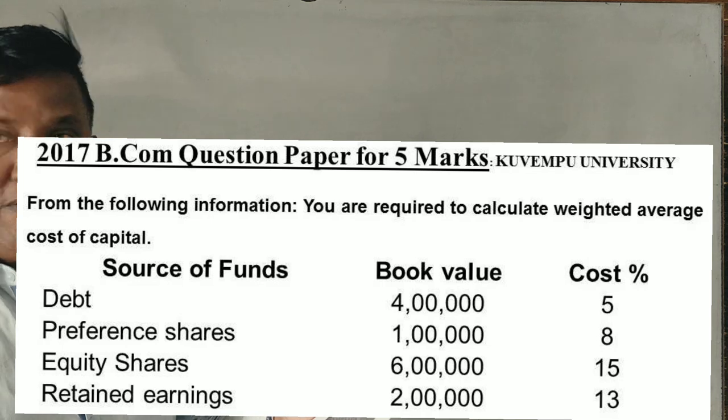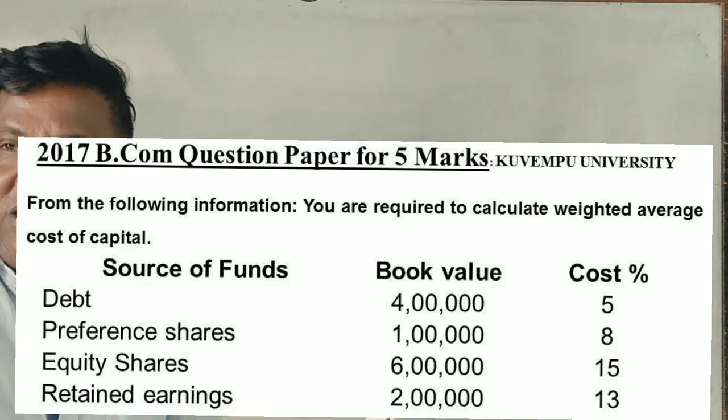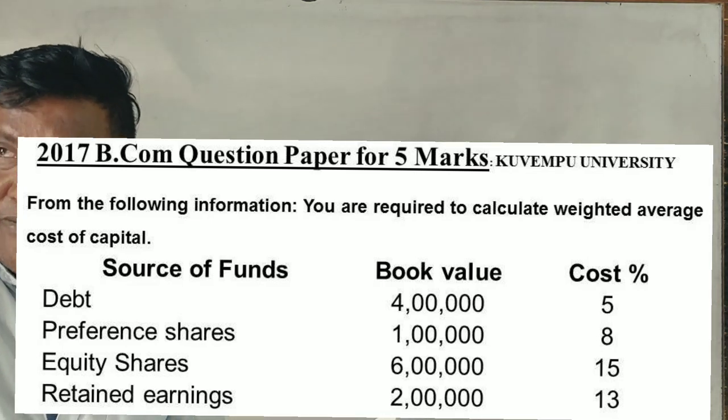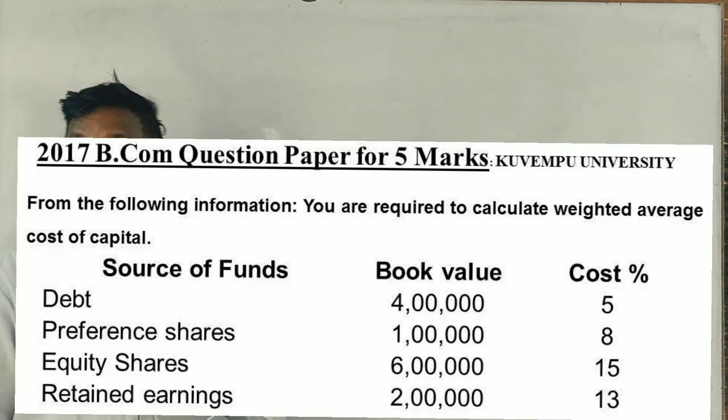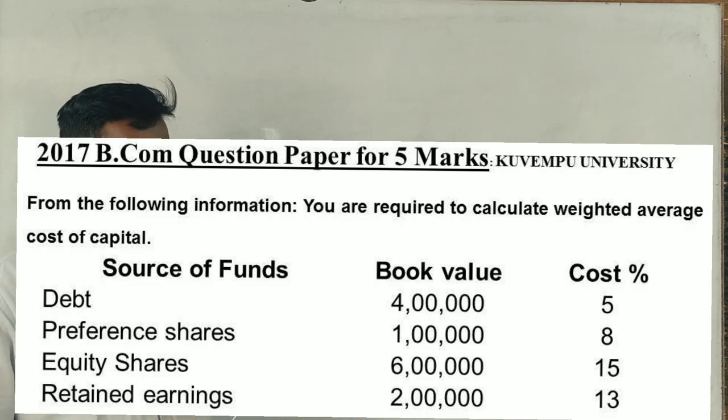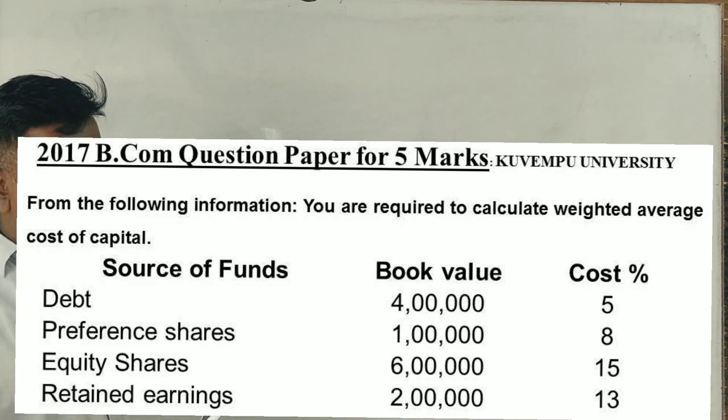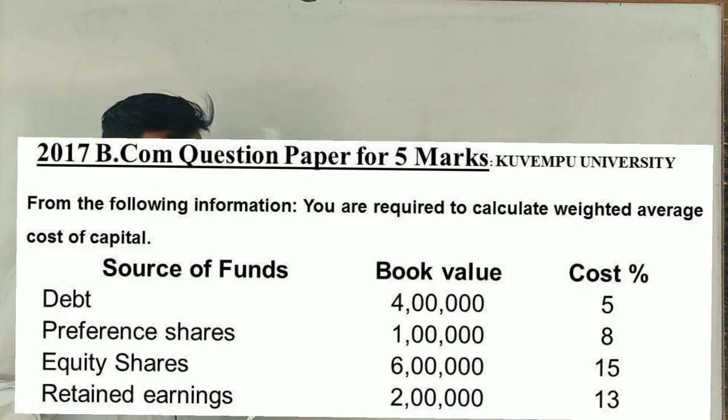From the following information, source of funds: debt capital or debt, book value 4 lakhs and cost percentage is 5%. Preference shares 1 lakh, 8%. Equity shares 6 lakhs, 15%. Retained earnings 2 lakhs, 13%.